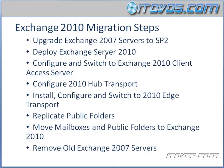After we've deployed our Exchange 2010 roles, we're going to configure and switch to the Exchange 2010 client access server. Then configure the 2010 hub transport server if necessary — if we need it to actually receive and send mail out to the internet. Next we're going to install, configure, and switch to a 2010 edge transport server. Then we're going to replicate all of our public folders if we have public folders. And then finally we're going to move mailboxes and public folders to Exchange 2010.